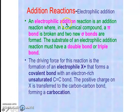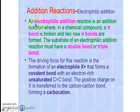Let me give a brief about what an addition reaction is. In an addition reaction, the attacking reagent is the electrophile, so it is called the electrophilic addition reaction. Addition means there has to be the addition of some reagent. In an electrophilic addition reaction, a pi bond is broken and two new sigma bonds are formed.